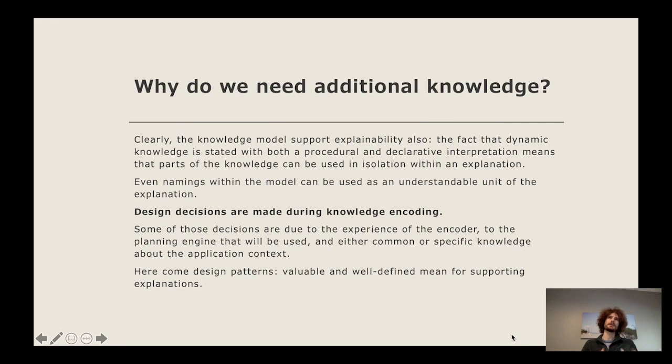Why do we need additional knowledge? Because the things you're putting in the model are basically the result of a number of decisions that have been made during the knowledge encoding. These decisions can come from a specific domain application, but can also come from the use of some design patterns or from the use of some specific dynamics that you want to encode. In that sense, the explanation and the problem description which comes with patterns is a very good means for supporting the explanation.